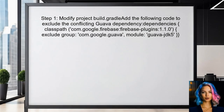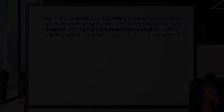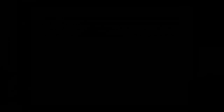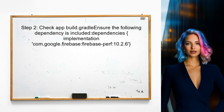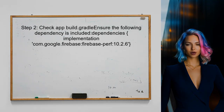To resolve the build error caused by the Guava dependency mismatch, the user should first modify the project build.gradle file. This is where the Firebase plugins are defined. Next, the user should ensure that the app build.gradle file is correctly set up with the Firebase Performance Monitoring dependency. This is crucial for the integration to work smoothly.